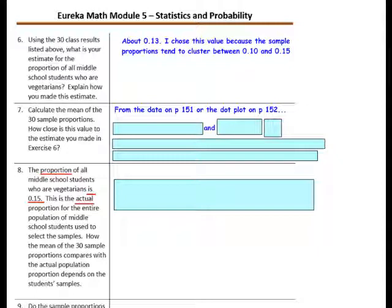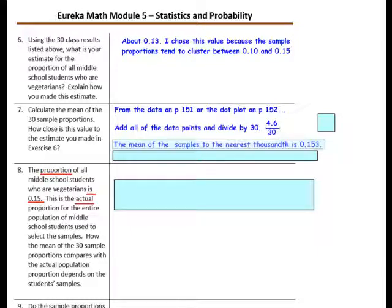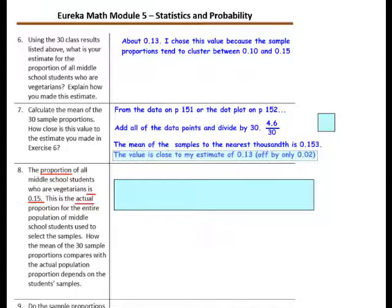Question 7: Calculate the mean of the 30 sample proportions using the data. Add all data points and divide by 30. When you add those values, you get 4.6, then divide by 30. The mean of the samples to the nearest thousandth is 0.153. How close is this value to the estimate from Exercise 6? The value is close to my estimate of 0.13 — it is off by only two hundredths.